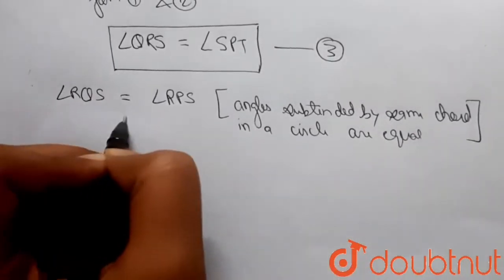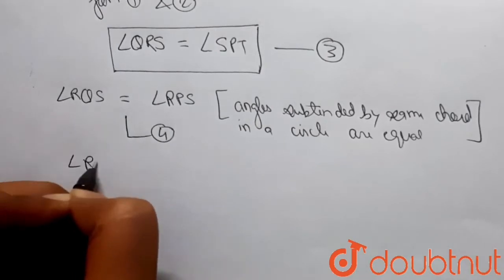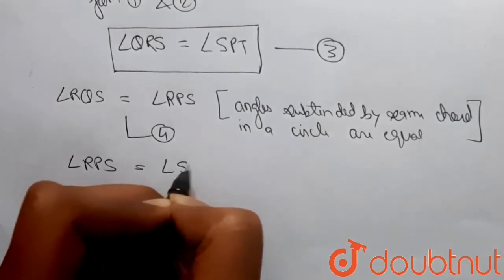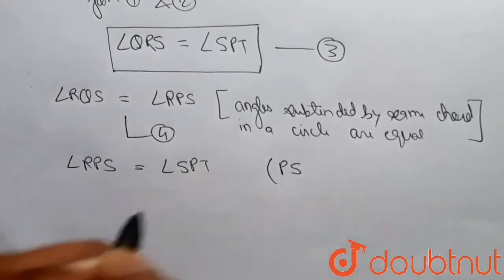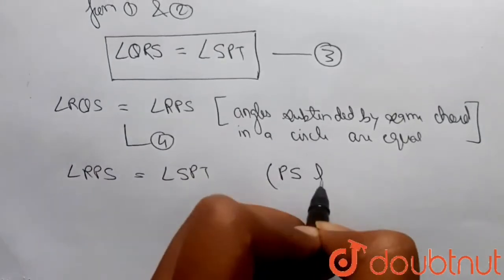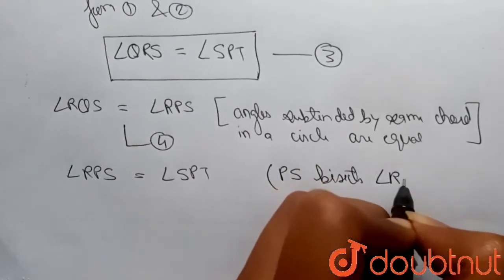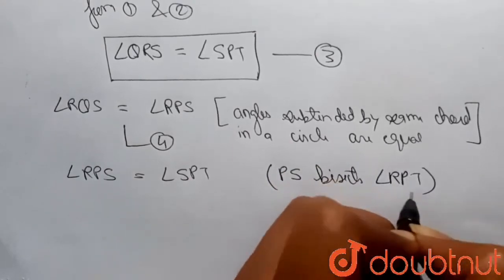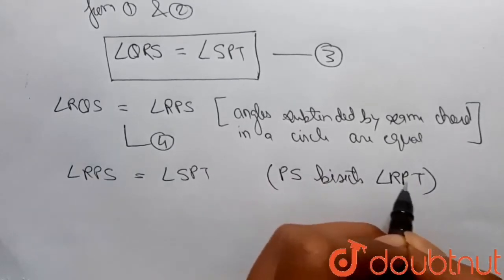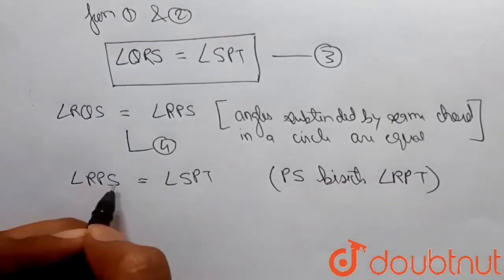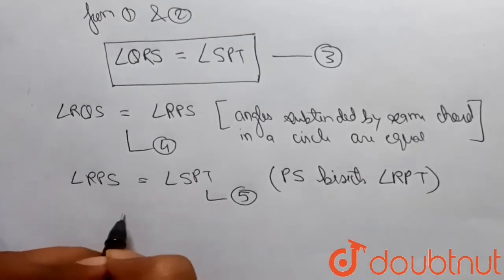Also, I can write that angle RPS will be equal to angle SPT, because it is given that PS is the angle bisector of angle RPT. Hence angle RPS equals angle SPT — let's call this equation five.